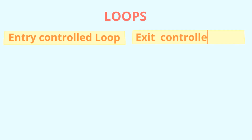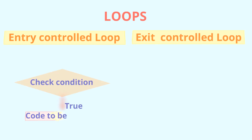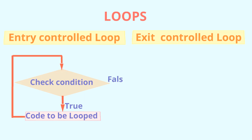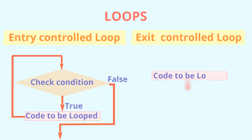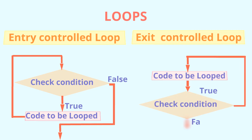There are two kinds of loops: entry control loop and exit control loop. In an entry control loop, the check as to when the loop stops executing is done in the beginning. In an exit control loop, the check to end the loop is done after each iteration, so the exit control loop is executed at least once. The while loop is an entry control loop and do-while is an exit control loop.